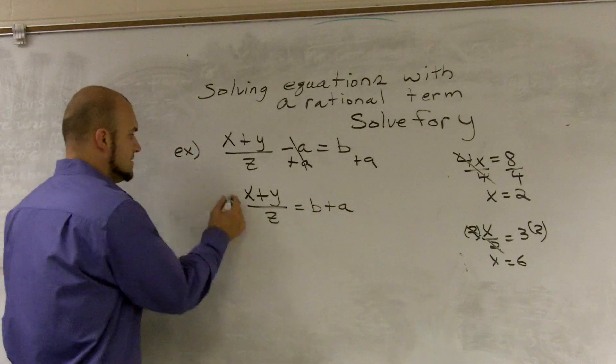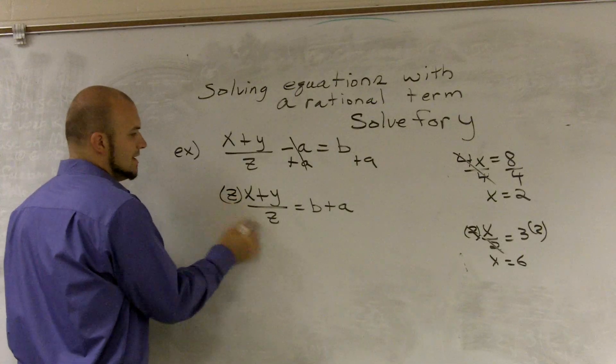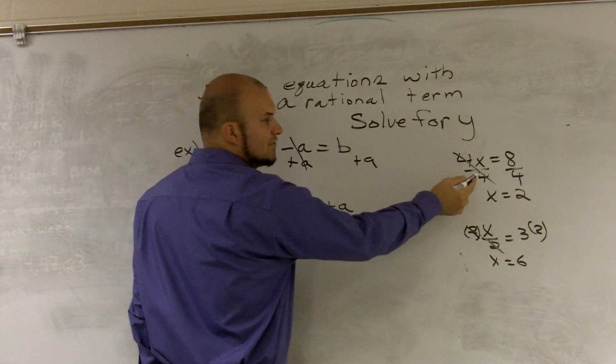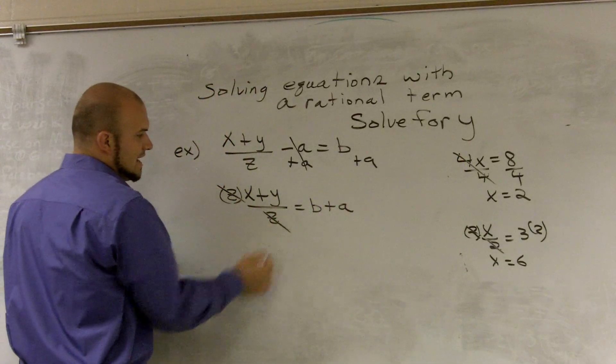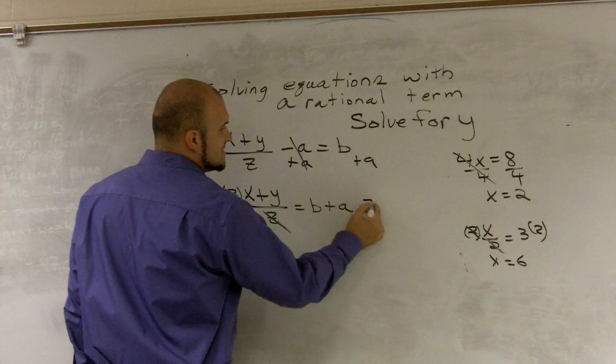Now, I'm going to go ahead and multiply by my z. And what I notice is, just like over here, 4 over 4 equals 1. Z over z is going to equal 1. So really, they cancel out. Then I multiply by z on this side.